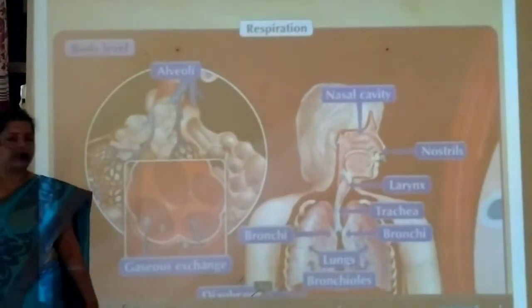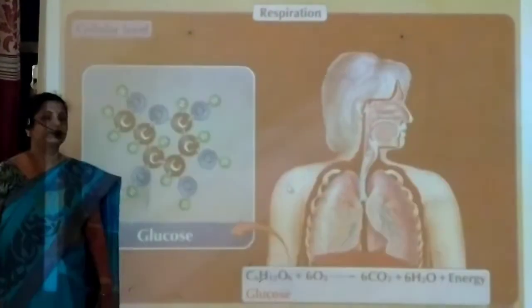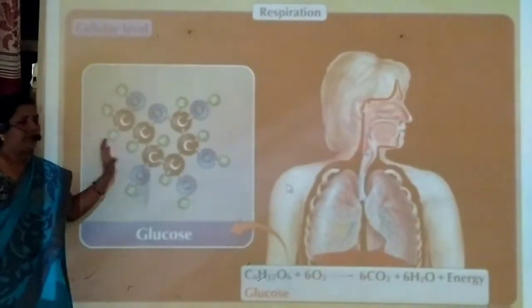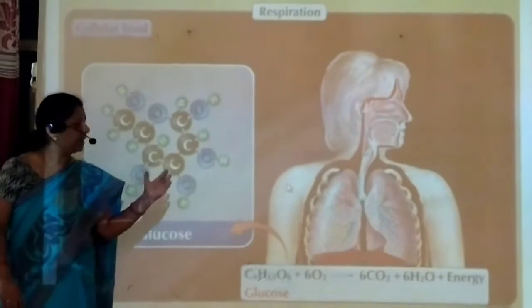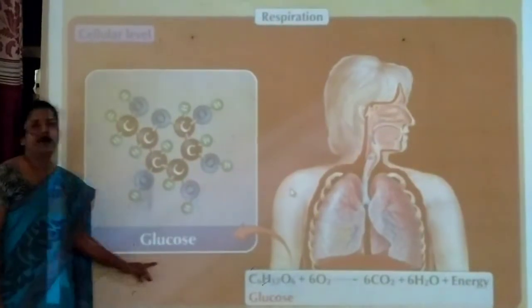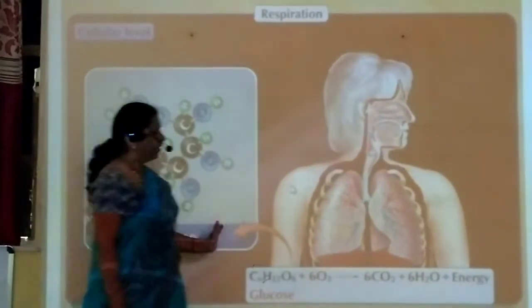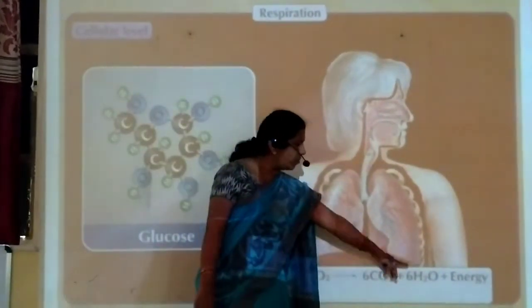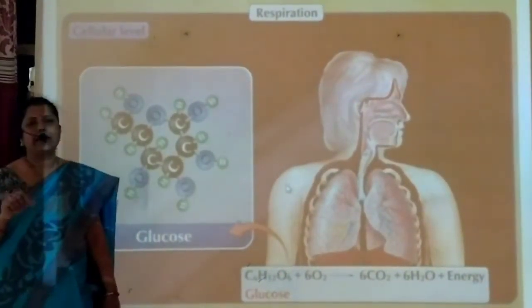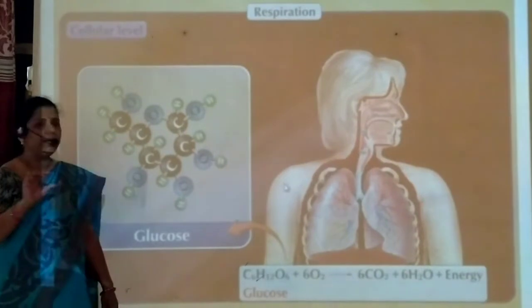This exchange of gases is a simple physical process. Now we study the second step: cellular respiration. During cellular respiration, in the mitochondria of every cell, glucose is oxidized — it combines with oxygen. An oxidation reaction takes place to release carbon dioxide, water, and energy. This energy is released in the form of a chemical compound called adenosine triphosphate, that is, ATP.